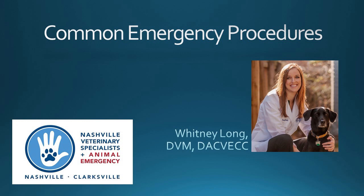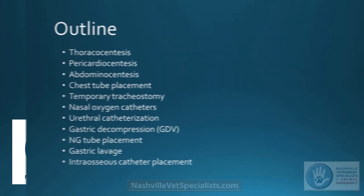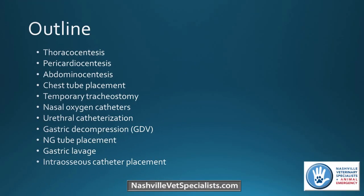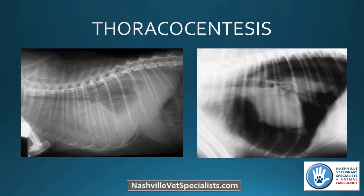I'm going to talk about common emergency procedures. This is an outline of different procedures we're going to cover. I'll go through each procedure, give you an idea of how a patient might present needing any of these procedures, and then go through the procedure itself, any complications, tips and tricks. The first one is a thoracocentesis.